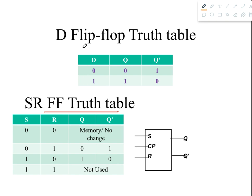Now we're going to build D flip-flop based upon SR flip-flop. In SR flip-flop, the state 1,1 was actually unusable — that was basically a problem. To solve that problem, D flip-flop was introduced.